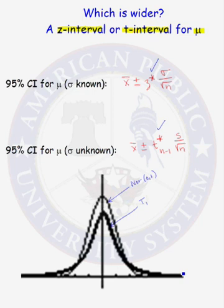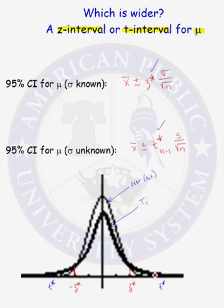What does it mean if the distribution has heavier tails? Let's locate the critical values z star and t star in our graphs. For a 95% confidence interval, 95% of the area in the standard normal curve is between z star and negative z star. However, because there is more area in the tails of a t distribution and less in the center, to get 95% of the area under the t distribution, our critical values are going to be larger compared to the standard normal distribution. So the confidence interval using a t critical value will be wider than the one using the standard normal distribution.